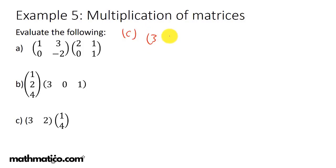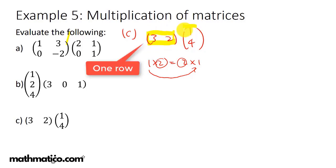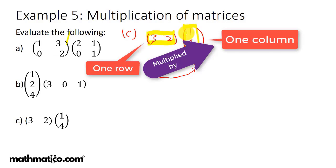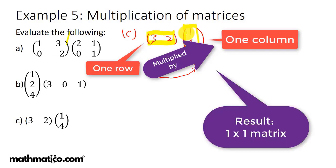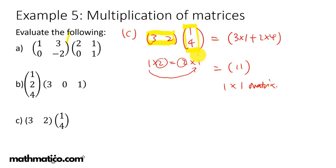For example 5c, we have a 1×2 matrix — three, two — multiplied by a 2×1 matrix — one, four. The inner numbers are both 2, so multiplication is possible. After multiplication the result is a 1×1 matrix. There is only one row and one column, so we compute: three times one plus two times four, which equals three plus eight, which is eleven. The result is the 1×1 matrix containing eleven.